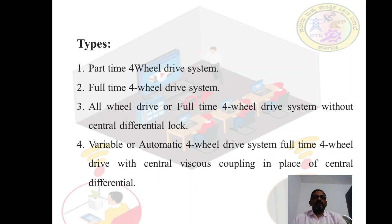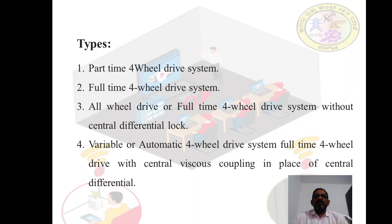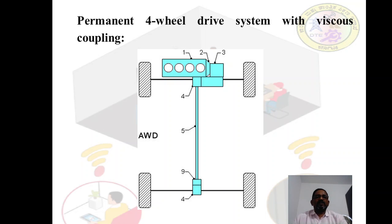The different types of four-wheel drive are: first, part-time four-wheel drive; second, full-time four-wheel drive or all-wheel drive — a full-time four-wheel drive system without a central differential lock; and finally, variable or automatic four-wheel drive — a full-time four-wheel drive with a central viscous coupling in place of the central differential. These are the different types of four-wheel drive systems.